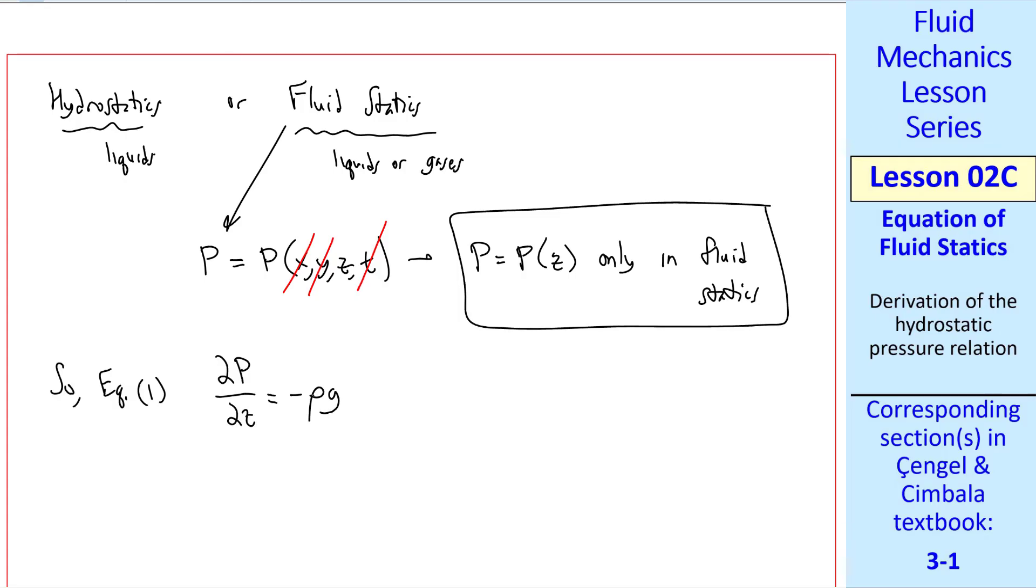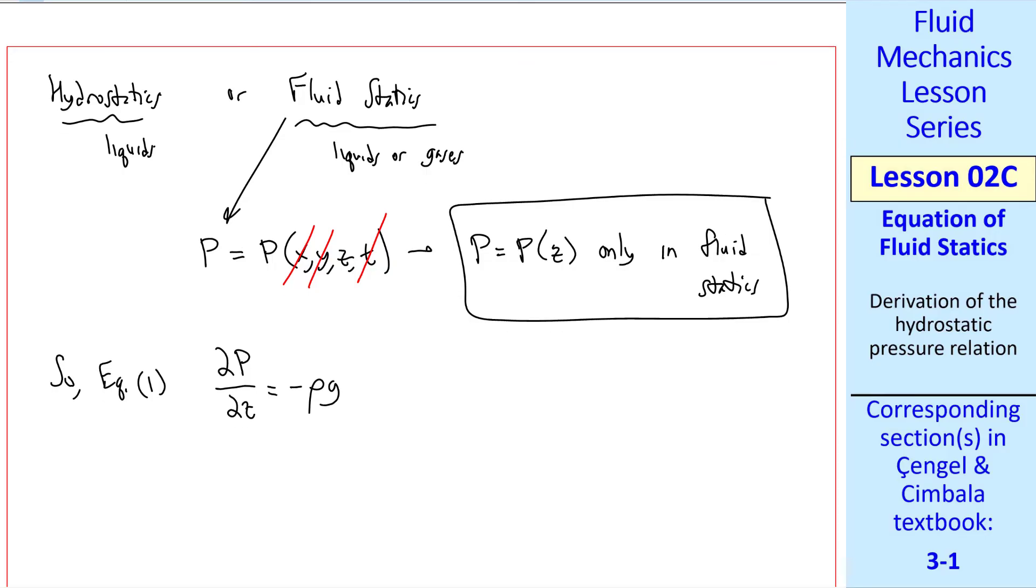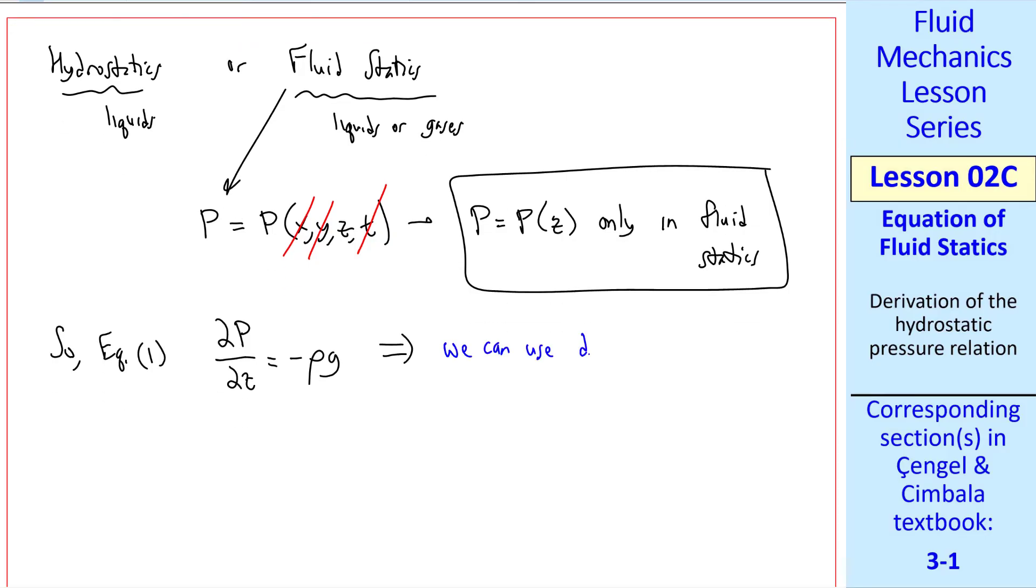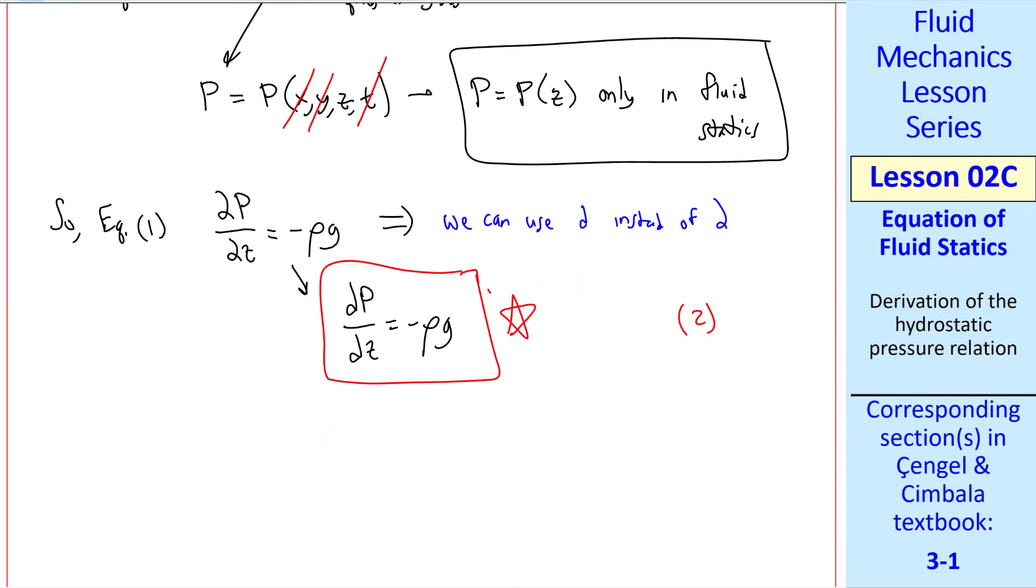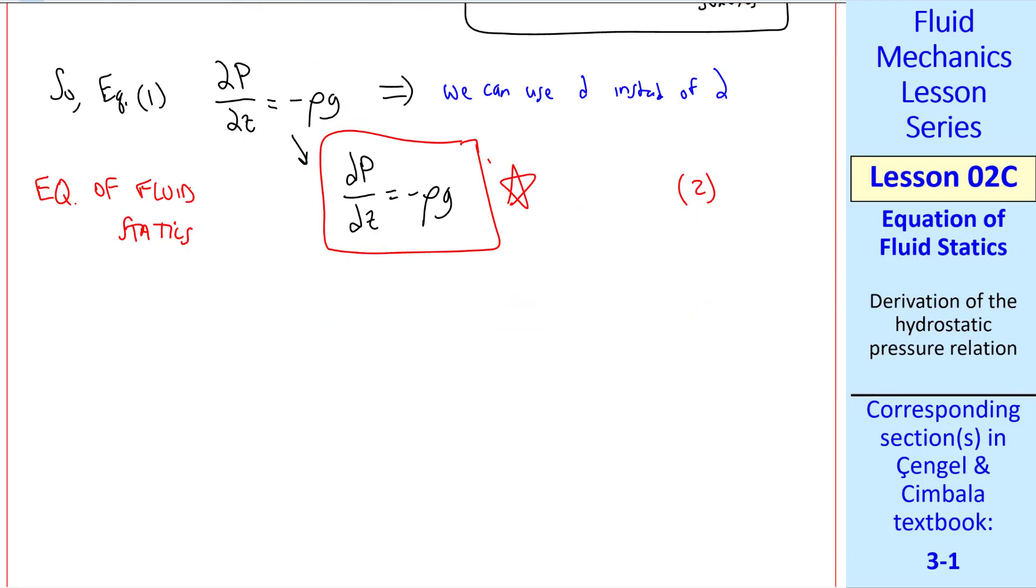So our equation one, which was del p del z is minus rho g, can be simplified, since we can use d, total derivative, instead of del, partial derivative. You need partial derivatives when a variable is a function of more than one independent variable. But here all we have is z. So we can rewrite one as dp dz equal minus rho g. I'll call that equation two. Really the same as equation one, except with total derivatives. So this is our equation of fluid statics or hydrostatics.